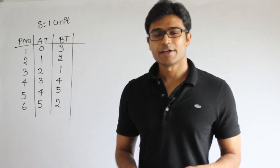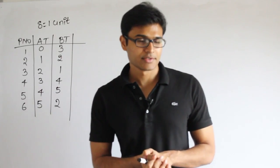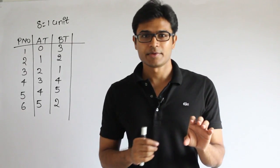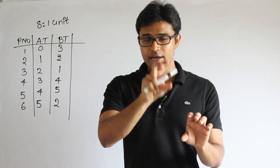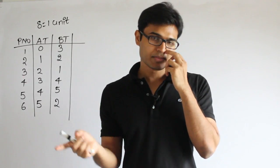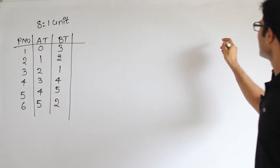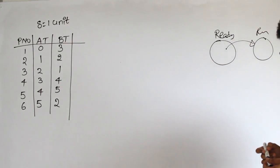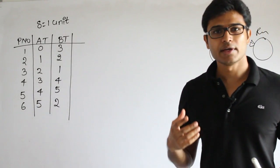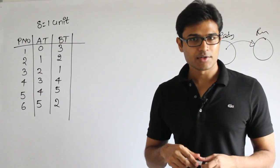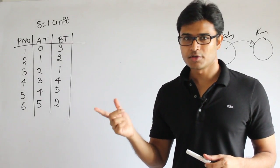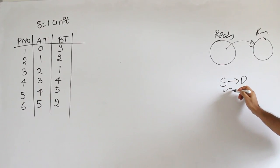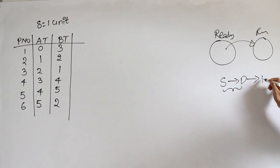This is a special kind of question because they are giving you the context switching time. Context switching time is the time between when a process is running and when the next process is scheduled. In between, the scheduler has to be invoked — the short-term scheduler — which decides which process to choose next, then calls the dispatcher, which changes the context so the next process can finally run.